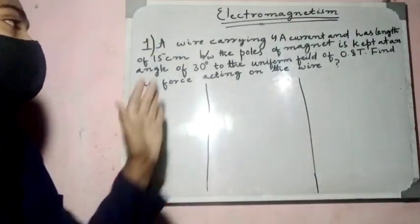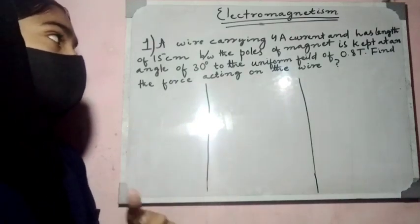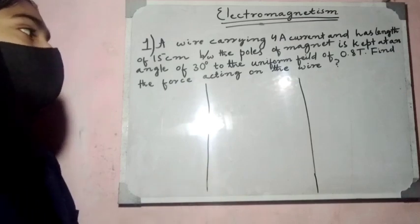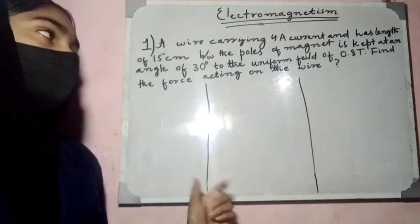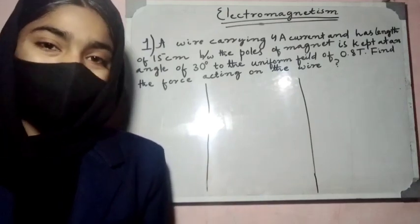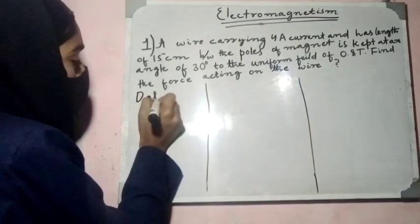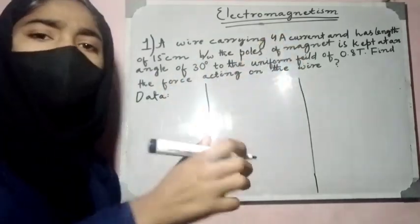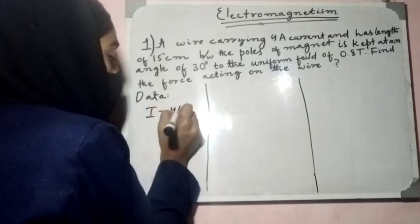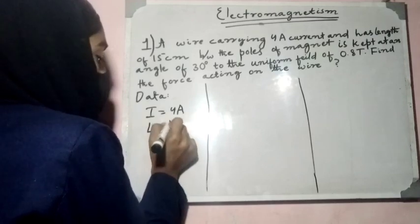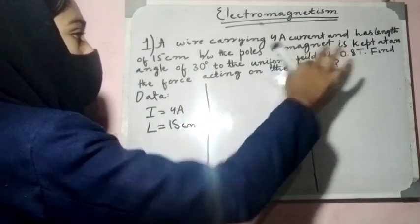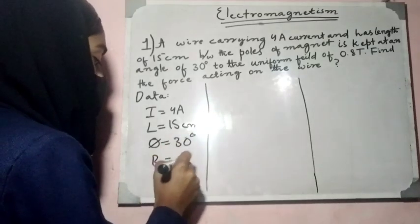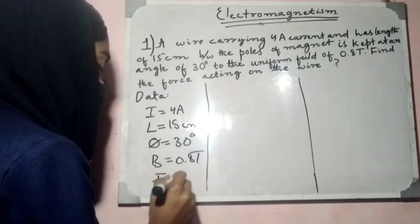The first problem is: A wire carrying 4 ampere current and has length of 15 cm between the poles of the magnet, at an angle of 30 degrees to the uniform field of 0.8 tesla. Find the force acting on the wire. We have to find the force. First of all, what do we need to do? We need to write data. Whatever data is given, we will write it.